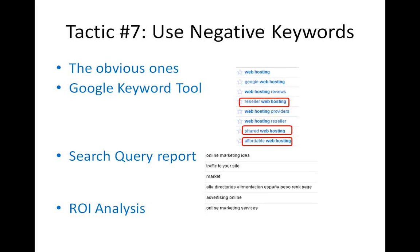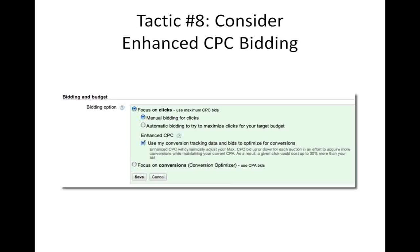Also do an ROI analysis. For all the keywords that send you traffic, look at how much a conversion costs you and put that side by side with how much money you make per conversion. For example, if the keyword 'cheap web hosting' costs $4 to get a conversion but each client is only worth $3, you're losing money. Remove it from your campaign and use 'cheap' as a negative keyword. Do an ROI analysis for each keyword and find the ones not making you money.